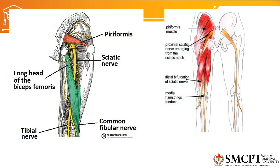The sciatic nerve passes through the piriformis muscle and then enters the posterior compartment of the thigh. Here it supplies innervation to the hamstring muscles: biceps femoris, semitendinosus, semimembranosus, and adductor magnus. Adductor magnus has a dual supply from the obturator nerve as well as the sciatic nerve — its hamstring compartment is supplied by the sciatic nerve. Before reaching the popliteal fossa, the sciatic nerve divides into the tibial nerve, which passes posterior to the leg, and the common fibular (peroneal) nerve, which passes laterally and wraps around the head of the fibula.